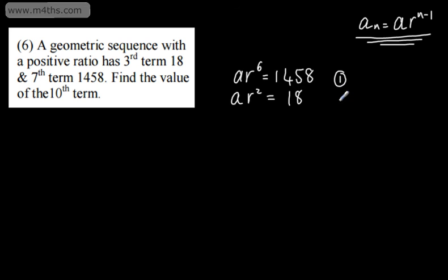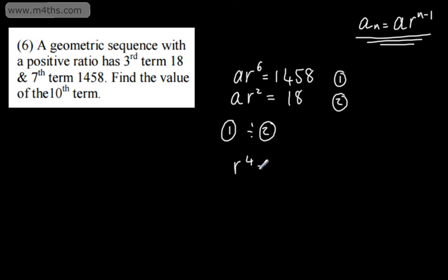I'm going to call this equation 1 and this equation 2. We can eliminate a and solve for r by dividing. So two unknowns, two equations. We have equation 1 divided by equation 2. a over a is 1, and r to the 6th over r squared gives us r to the 4th. Then we'll have 1458 over 18, which gives us 81.